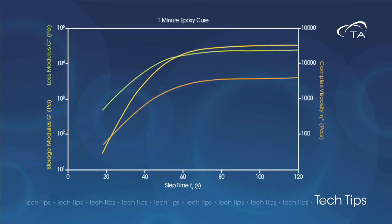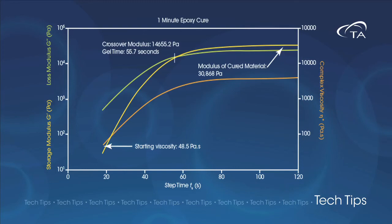Non-iterative sampling allows us to measure the viscosity of the uncured sample, the gel time, and the modulus of the cured material without having to do three different experiments.